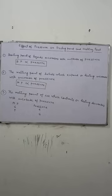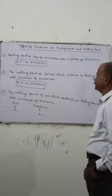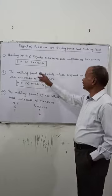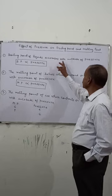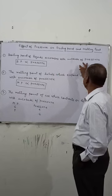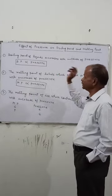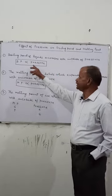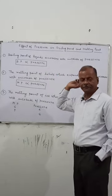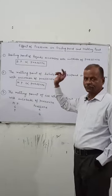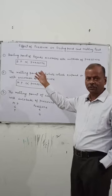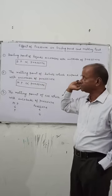Effect of pressure on the boiling point and the melting point. The boiling point of liquids increases with the increase of pressure, so BP is proportional to the pressure. This we have seen in the case of a pressure cooker.